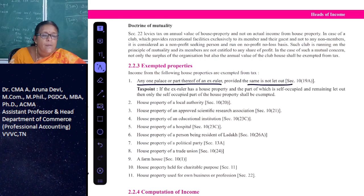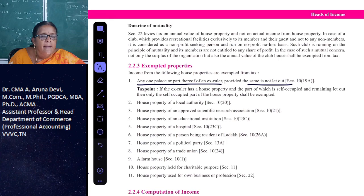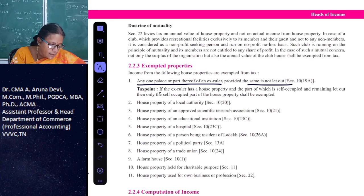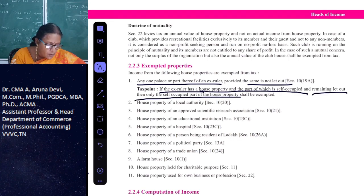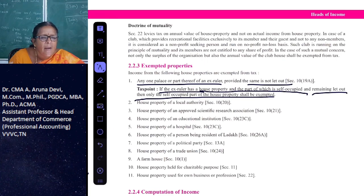One example is an ex-ruler's palace. If the ex-ruler has a house property and part of it is self-occupied and the same is not let out, it is exempt from tax. However, if part of it is self-occupied and the remaining is let out, then only the self-occupied part of the house property shall be exempted.